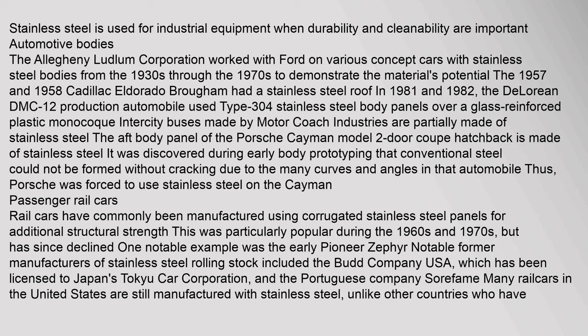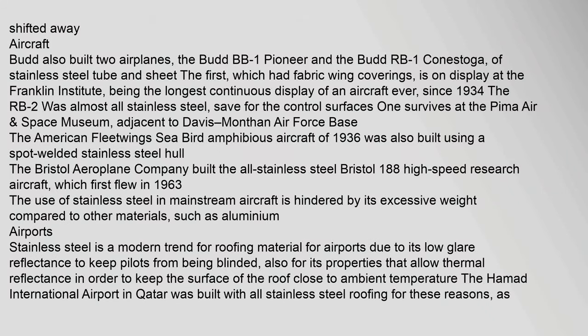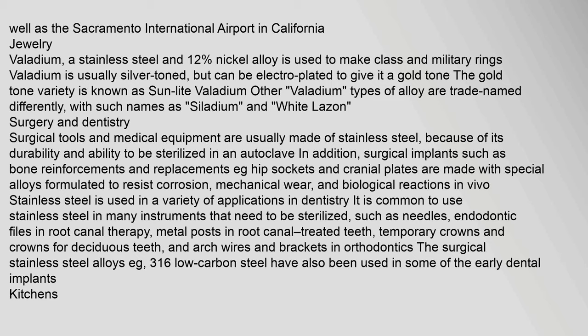Rail cars have commonly been manufactured using corrugated stainless steel panels for additional structural strength, particularly popular during the 1960s and 1970s. One notable example was the early Pioneer Zephyr. Notable former manufacturers of stainless steel rolling stock included the Budd Company (USA), licensed to Japan's Tokyo Car Corporation and the Portuguese company Sorafame. The Budd Company also built two airplanes — the Budd BB-1 Pioneer and the Budd RB-1 Conestoga — of stainless steel tube and sheet. The BB-1 has been on display at the Franklin Institute since 1934, the longest continuous display of an aircraft.